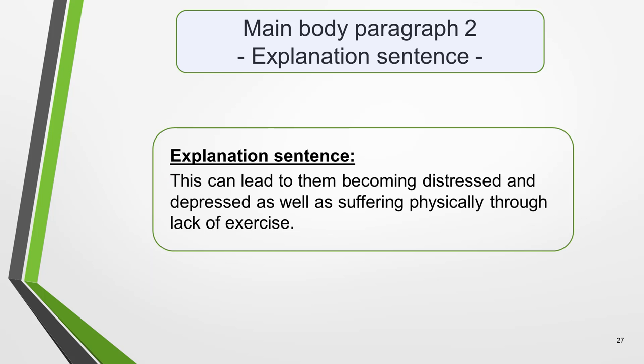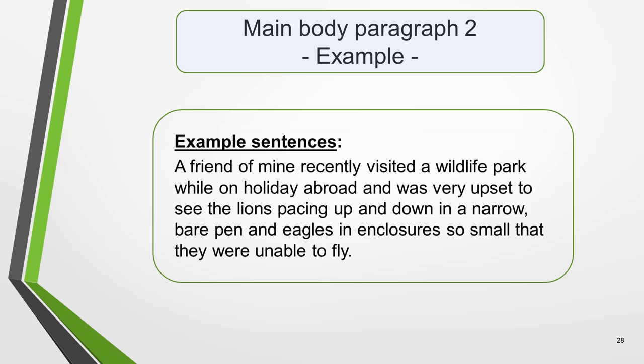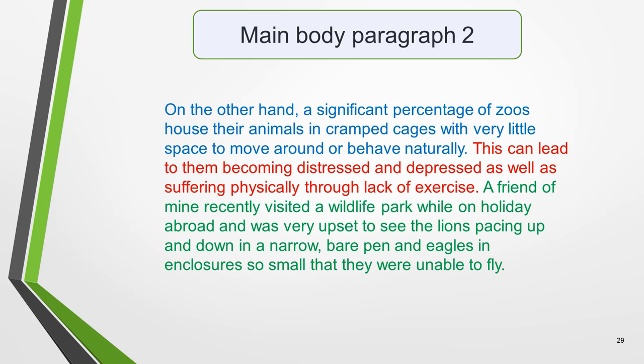Now for the explanation sentence: 'This can lead to them becoming distressed and depressed, as well as suffering physically through lack of exercise.' Finally, an example — as mentioned, you can make one up if you need to. Here's the example: 'A friend of mine recently visited a wildlife park while on holiday abroad, and was very upset to see the lions pacing up and down in a narrow bare pen, and eagles in enclosures so small that they were unable to fly.' That completes the three parts of our second main body paragraph.